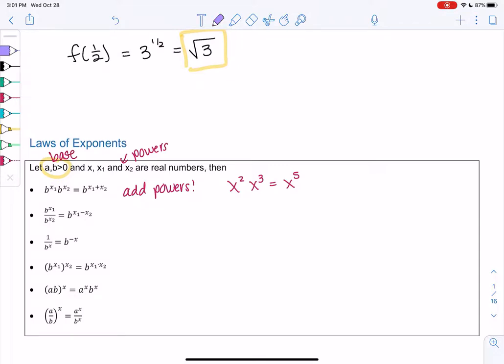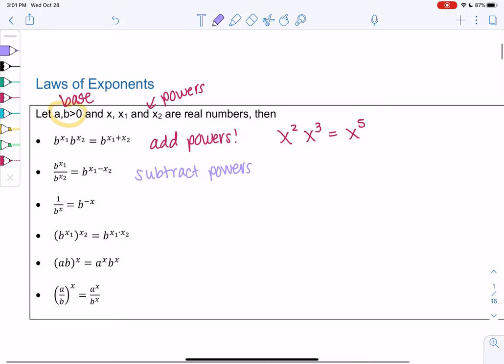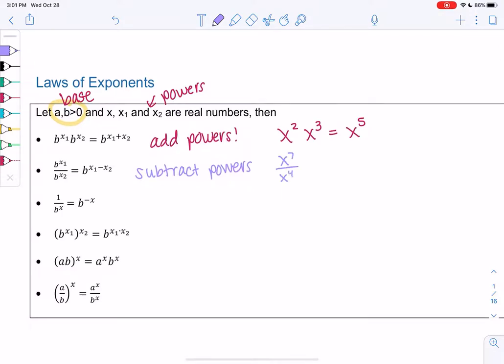Similar for division. b to the x1 over b to the x2, we can actually subtract powers. So we combine them by a single b to the x1 minus x2. An example might be x to the seventh over x to the fourth. 7 minus 4 is 3, so we get x cubed.